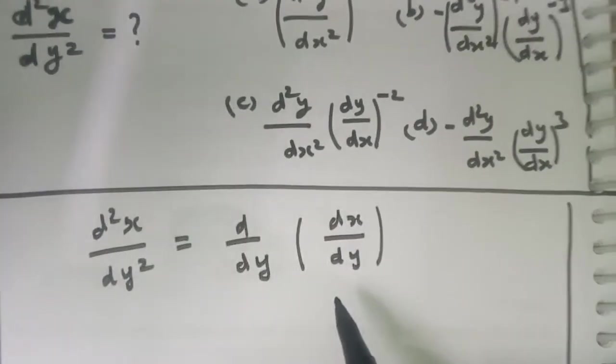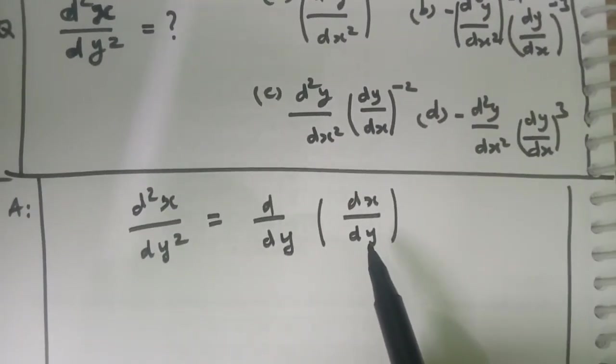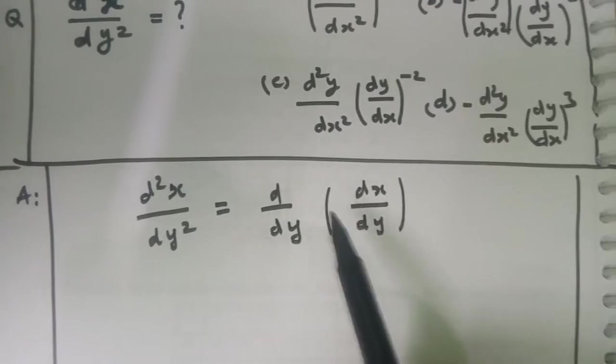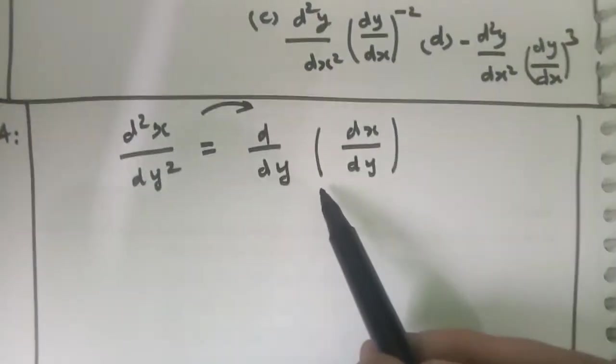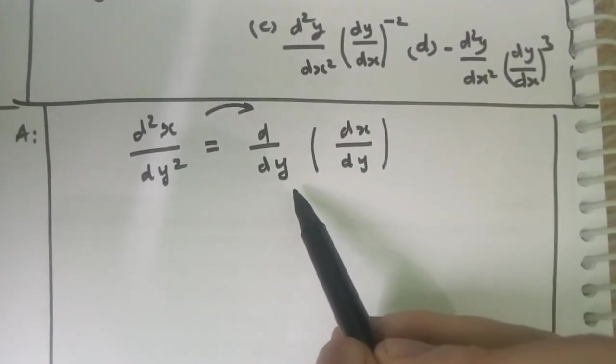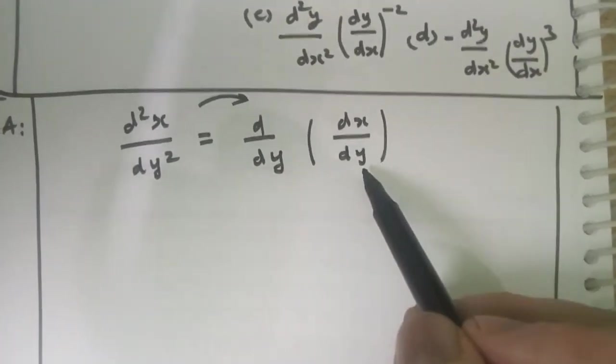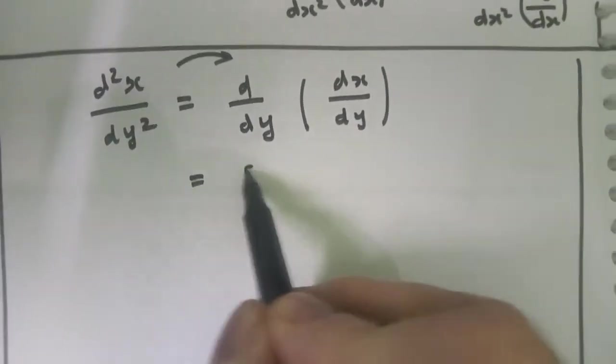This is the definition. For finding the solution, we write by definition d²x/dy² equals d/dy of dx/dy.